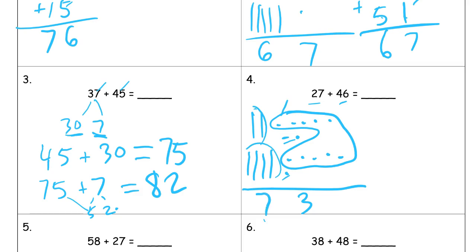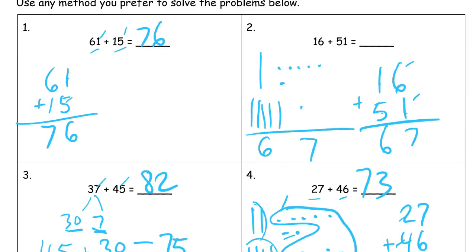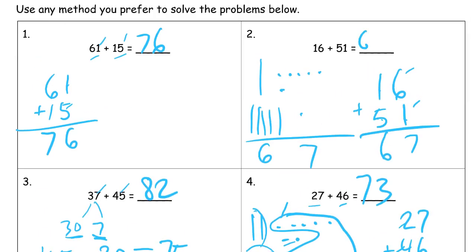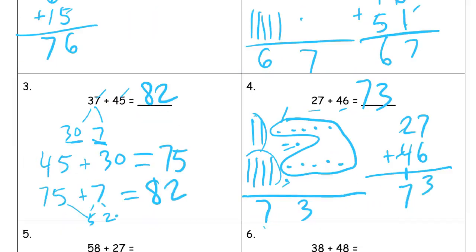And I'm going to write it vertically too. So 27, 46, seven plus six, we know we have that three and we need that 10 right here. And then we just add our tens, the two and the four, six, one more, seven, 73. Let me go back and make sure I wrote in all my answers here, all my sums.